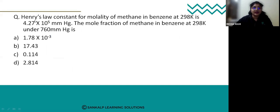The question is: Henry's law constant for molality of methane in benzene at 298 Kelvin is 4.27 × 10^5 mmHg. The mole fraction of methane in benzene at 298 Kelvin under 760 mmHg is?